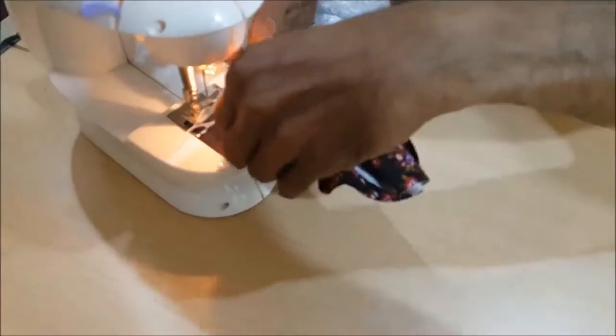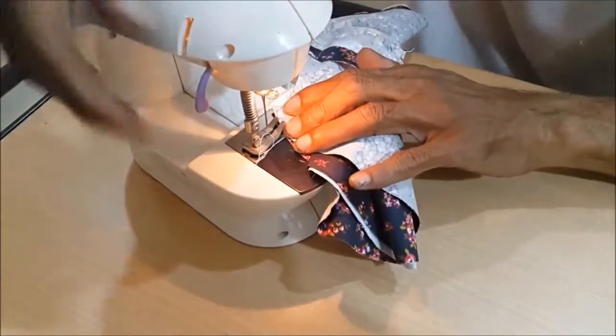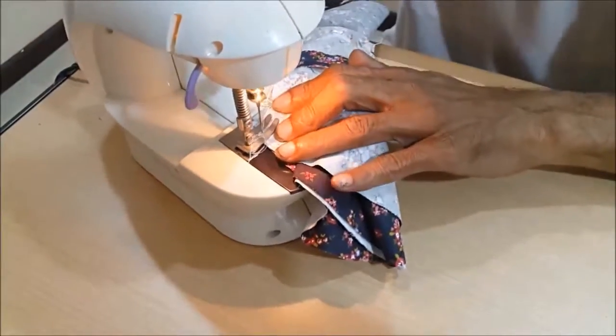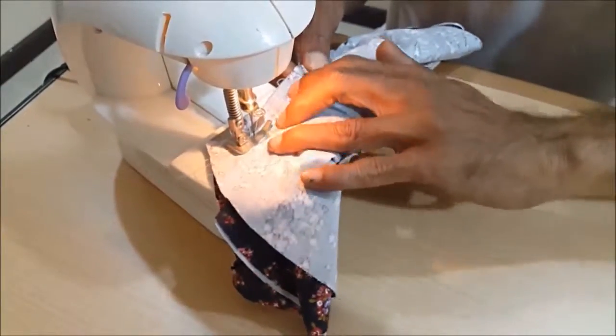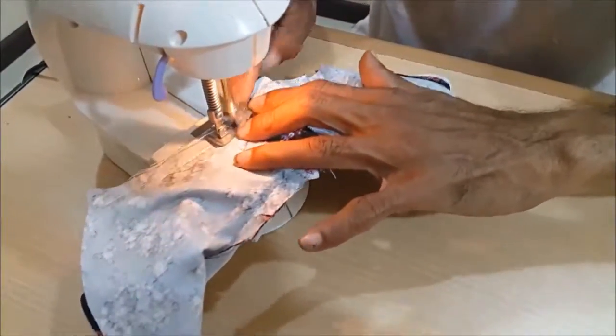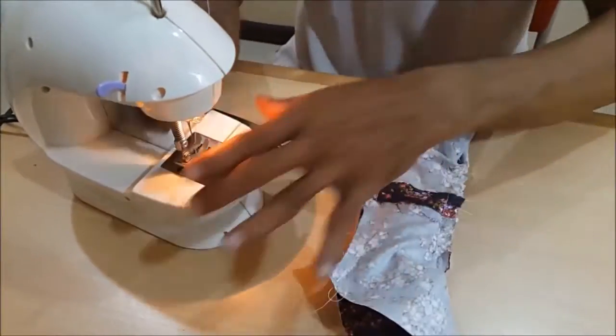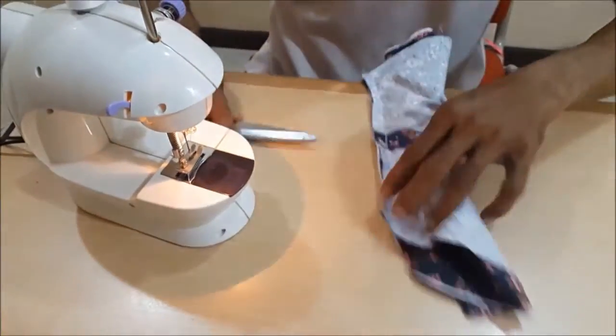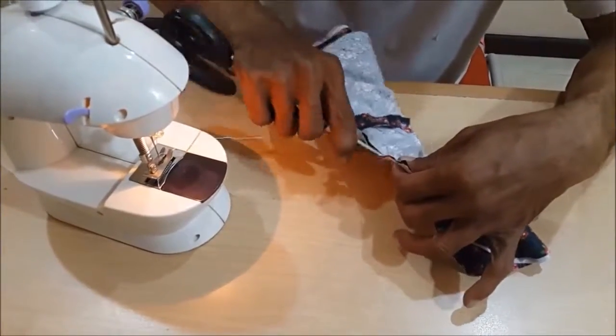Now stitch it from the other side. We were starting from the middle point, and now we continue it from the other side, from the left side. Then you can cut it like that and pull one of the sides outwards.